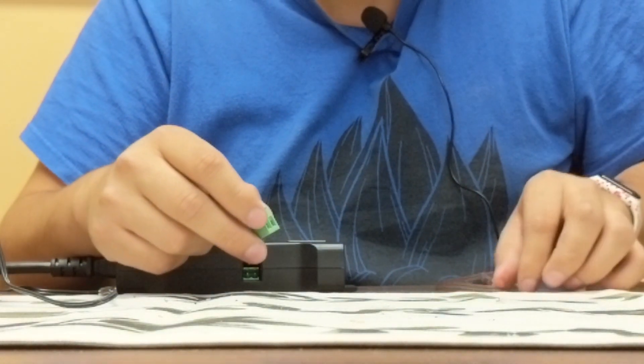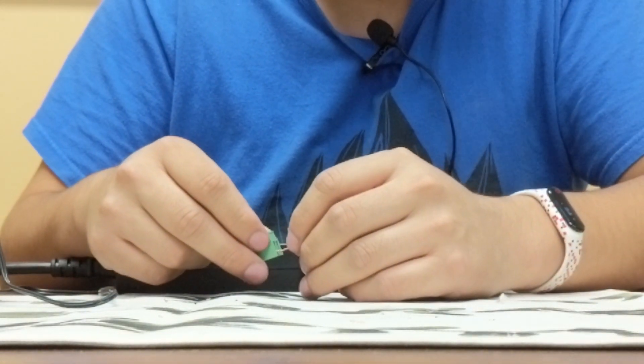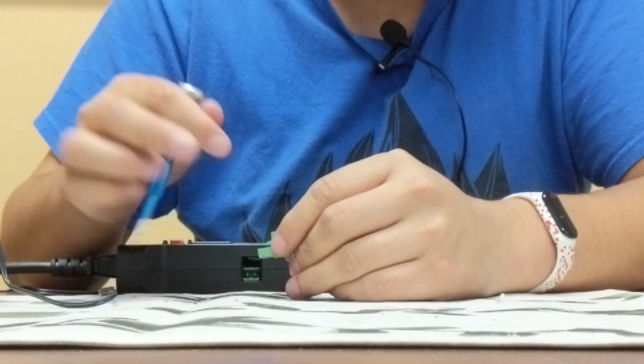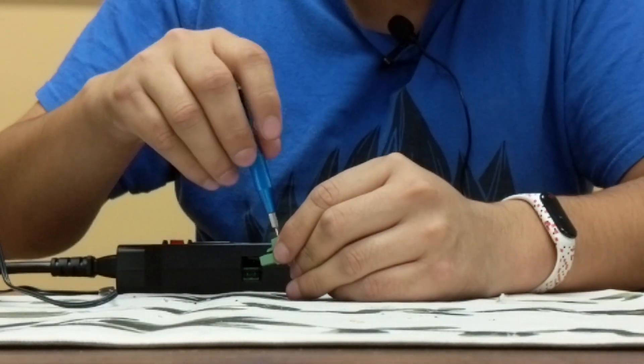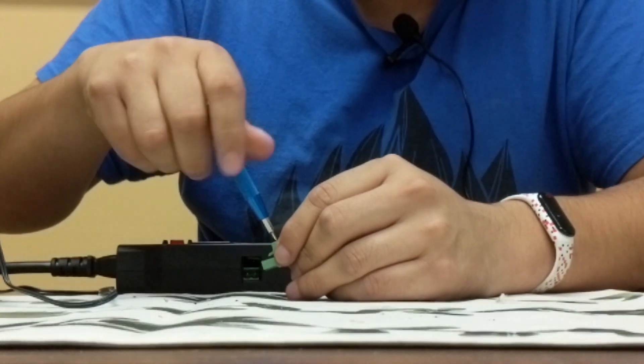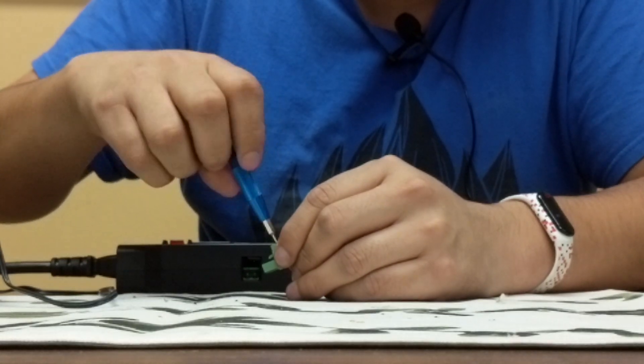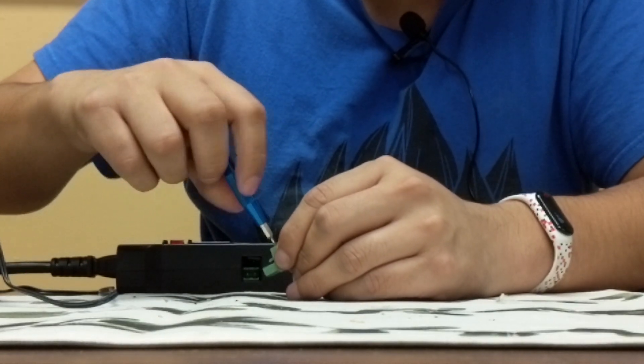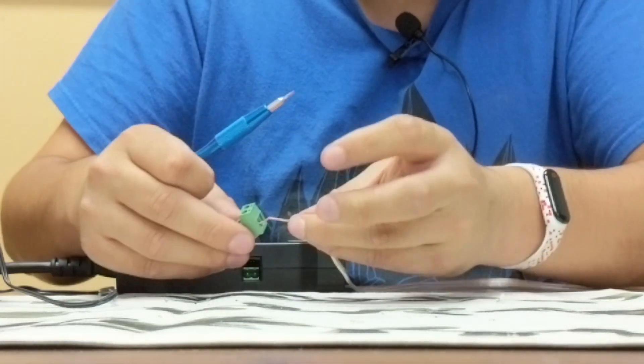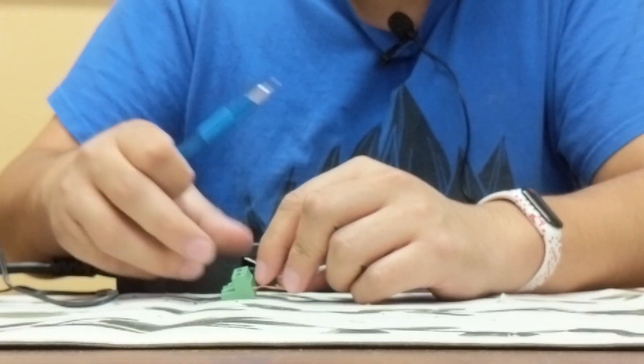Alright, once we do that, we can go ahead and just fill in our wires, feed in our wires in there, and then tighten it. So screw right until you can't. Oops, sorry. Screw right. Perfect. You have our one wire in, and we do the same thing to the other one.